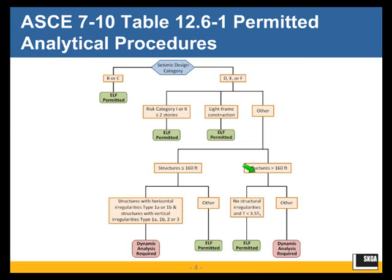Even if your Design Category is D, E, or F, under two circumstances dynamic analysis will never be required. First, if you have a Risk Category 1 or 2 structure — that is miscellaneous or standard occupancy — that is less than or equal to two stories tall, then equivalent lateral force procedure is always permitted, irrespective of how irregular your structure may be. Also, a structure of light frame construction — wooden studs with sheathing, metal studs with sheathing, or cold-formed steel studs with sheathing — irrespective of height or irregularity, equivalent lateral force procedure is always allowed.